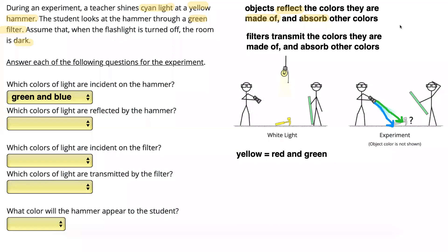So that means that the green ray that was incident on the hammer can get reflected since yellow contains green. So the green ray is going to get reflected. The blue ray, however, is not included in yellow. And since objects absorb other colors that they're not made up of, the yellow hammer is going to absorb that blue ray. And that's not going to get reflected. So the only color of light actually reflected by the hammer is green.